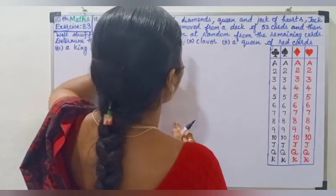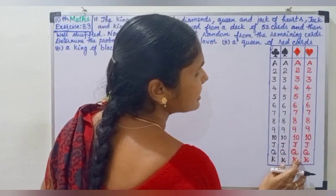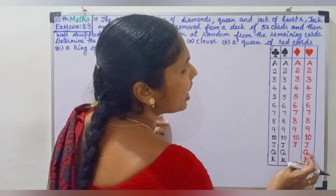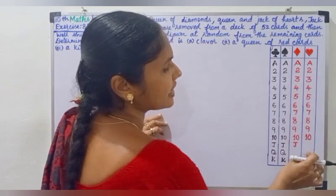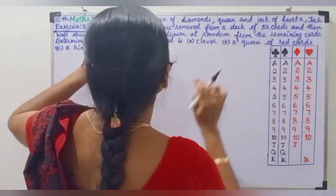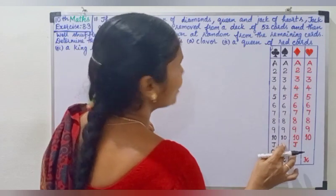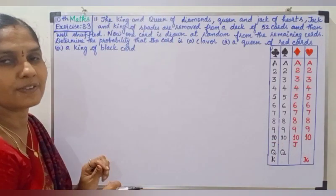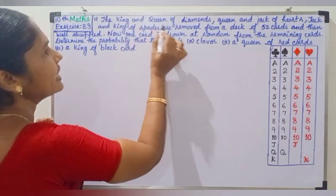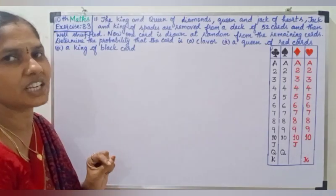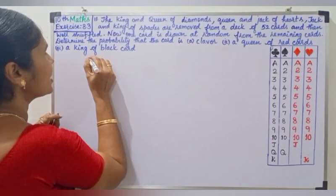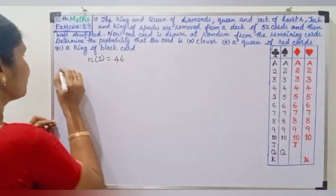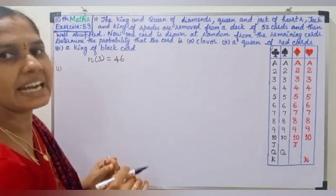The removed cards are: King and Queen of Diamonds, Queen and Jack of Hearts, Jack and King of Spades — that is 6 cards removed. So n of S equals 52 minus 6, which is 46. We will now find n of S, which is 46.